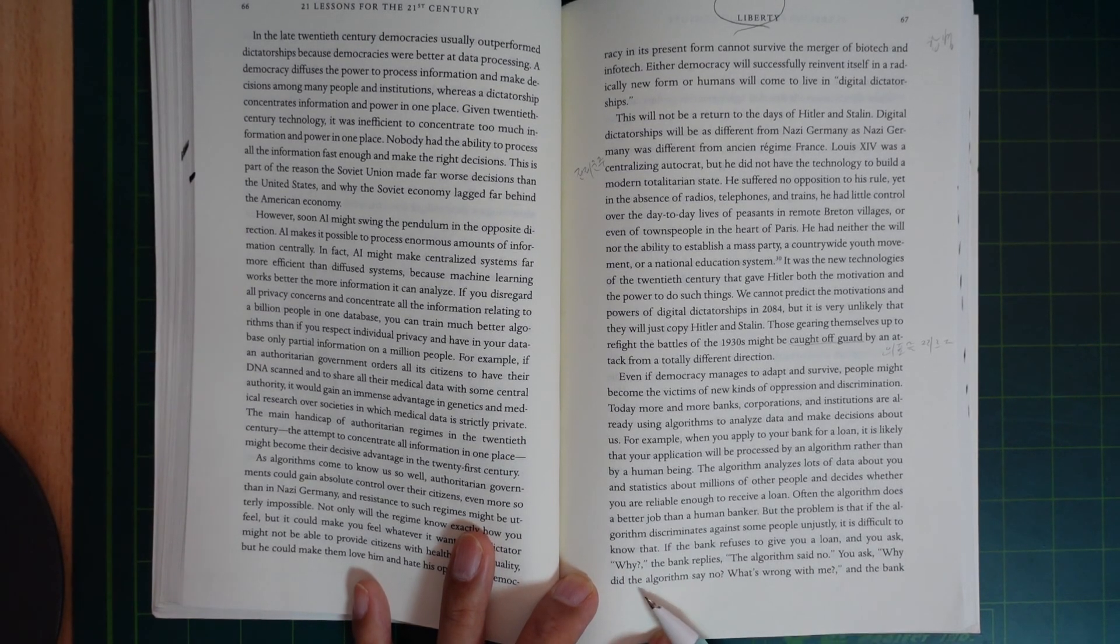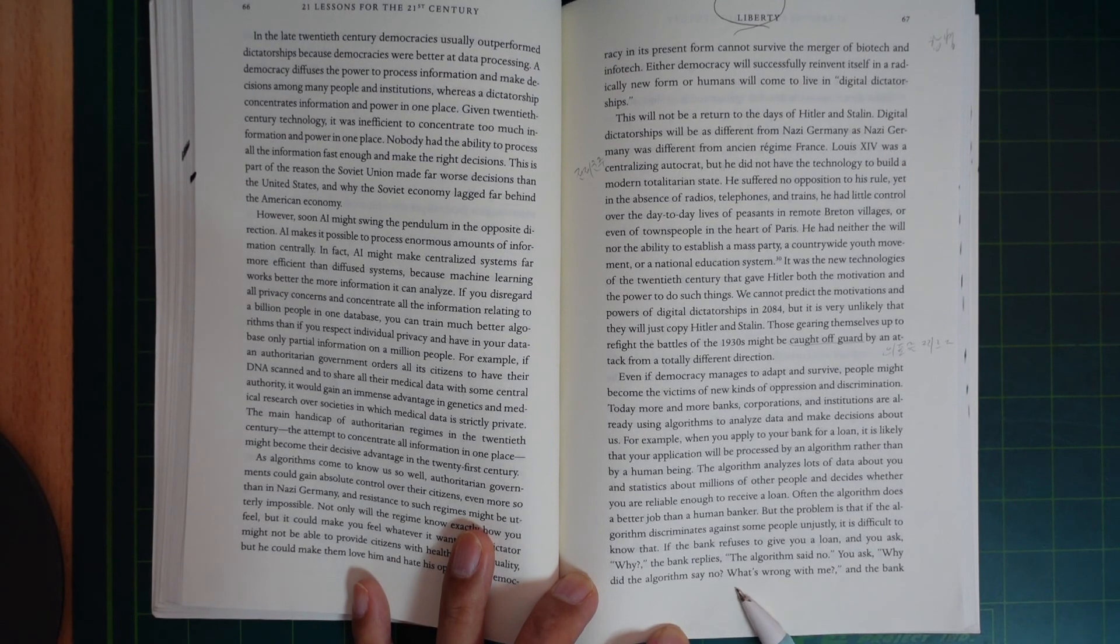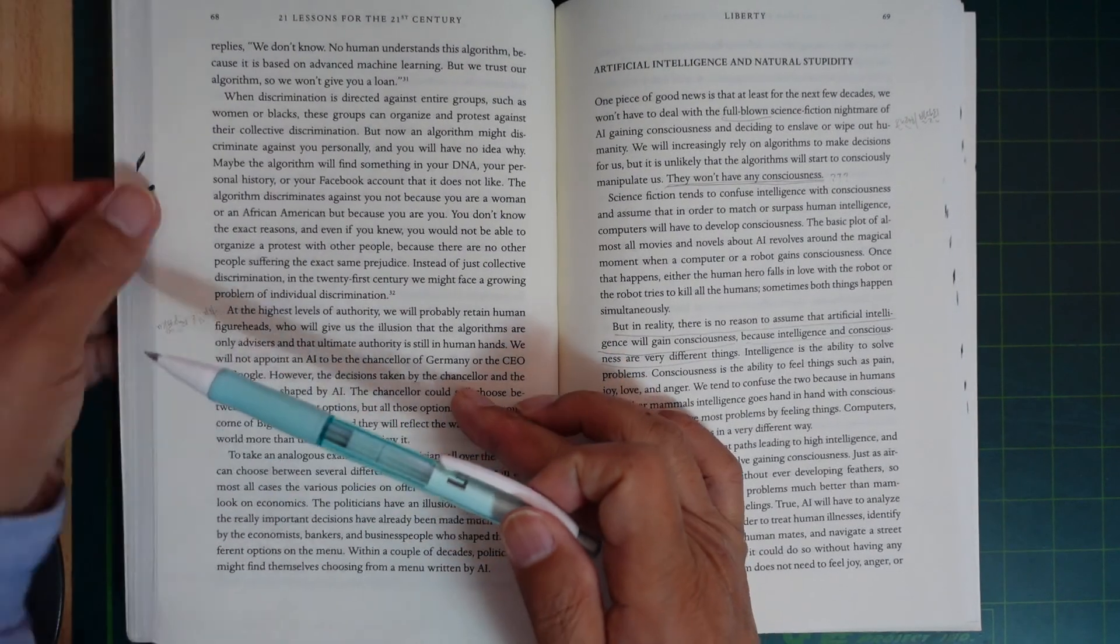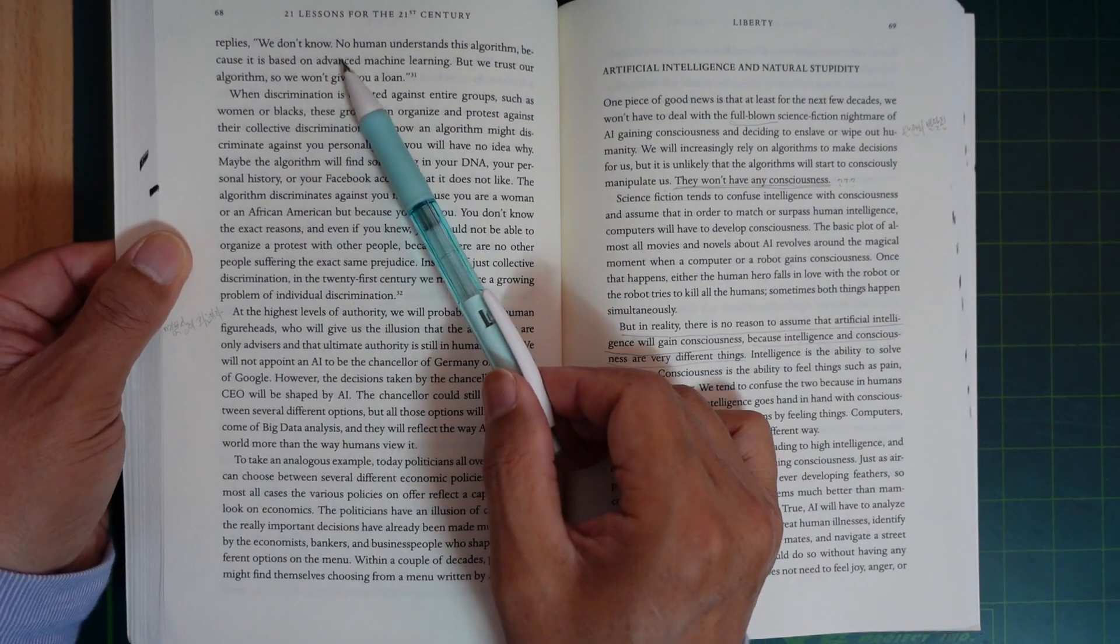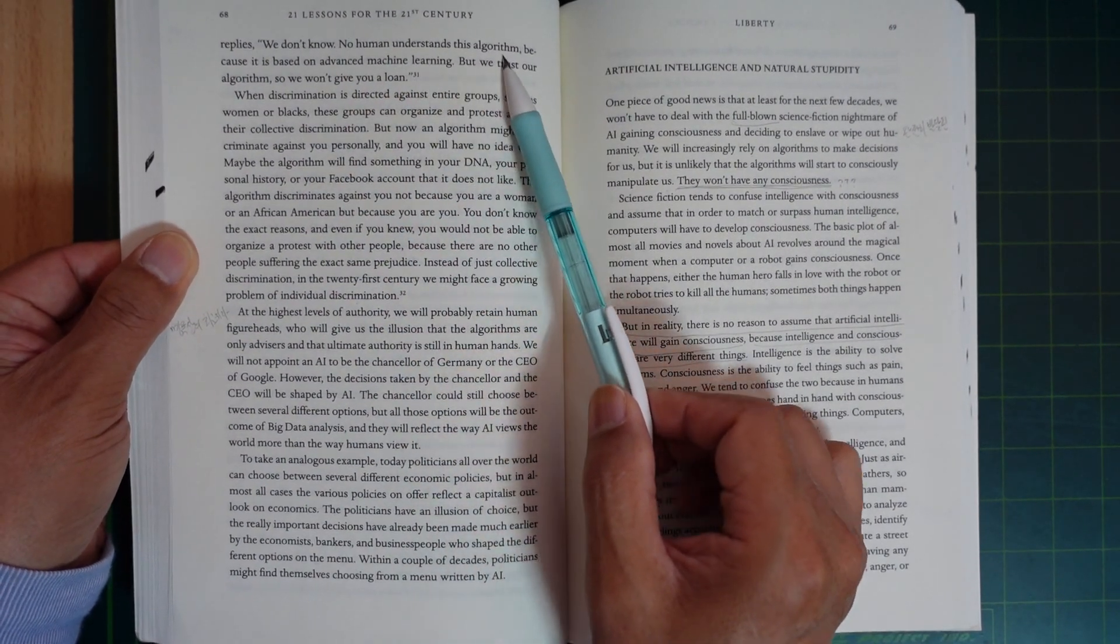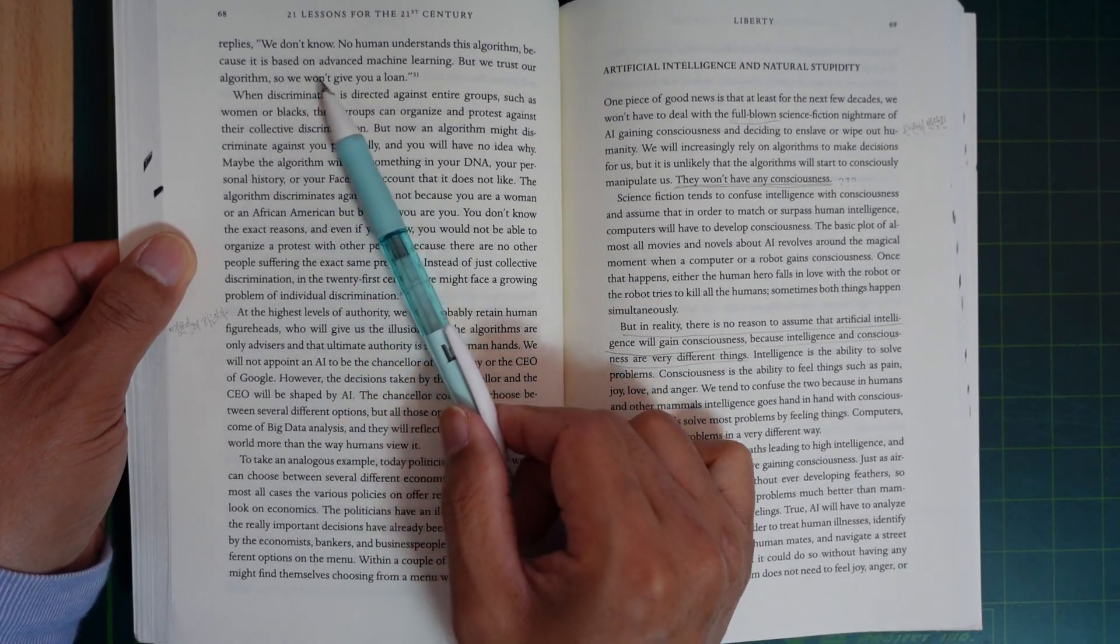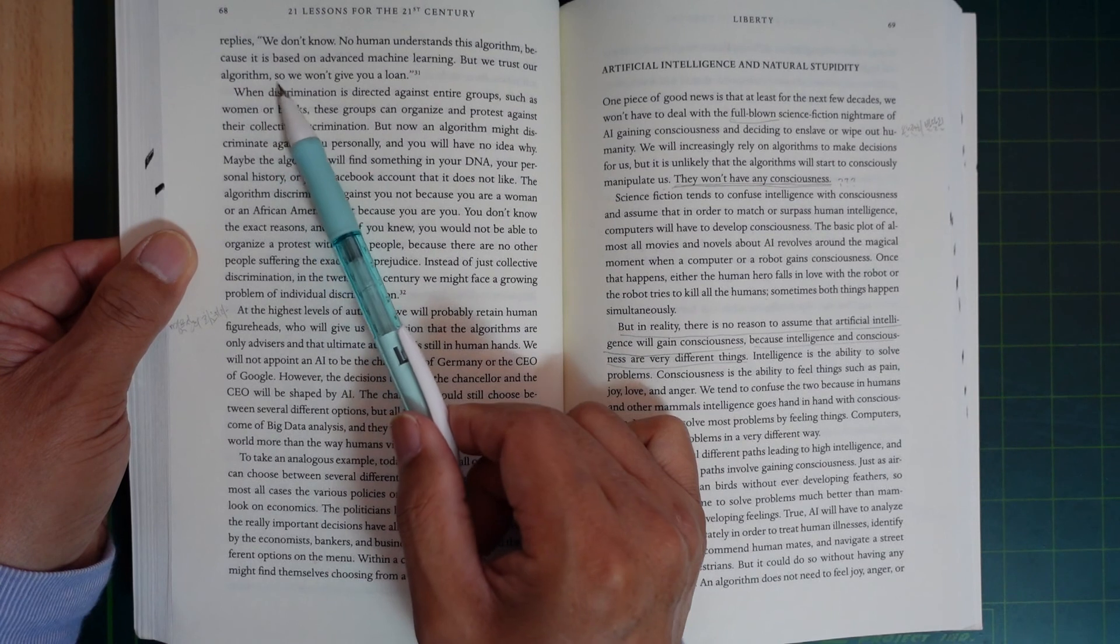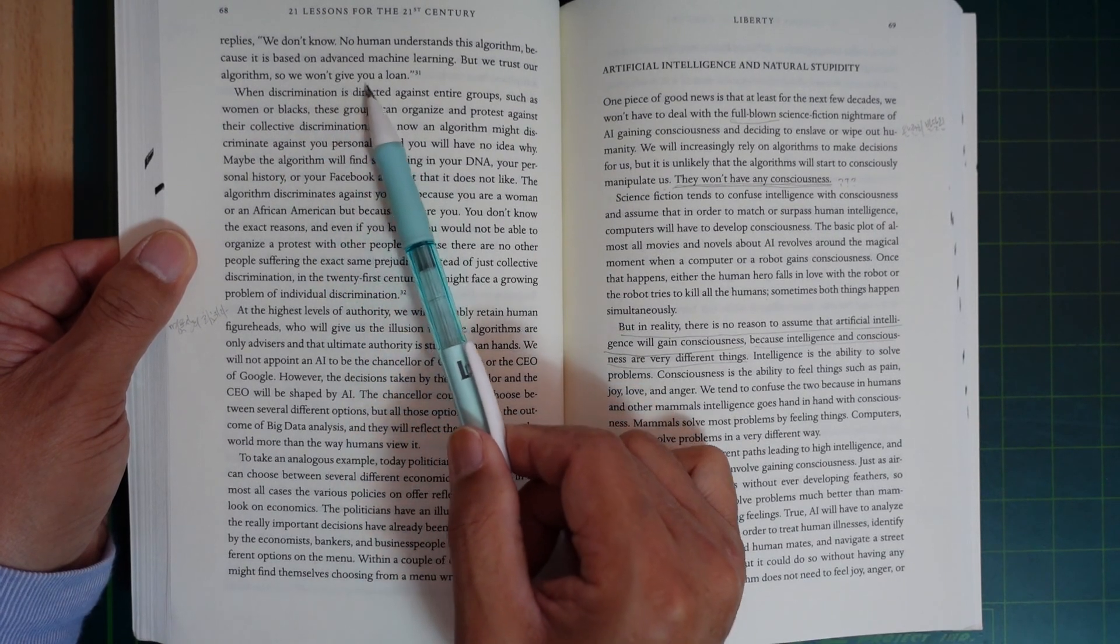You ask, why did the algorithm say no? What's wrong with me? The bank replies: we don't know. No one understands this algorithm because it's based on advanced machine learning, but we trust our algorithm, so we won't give you a loan.